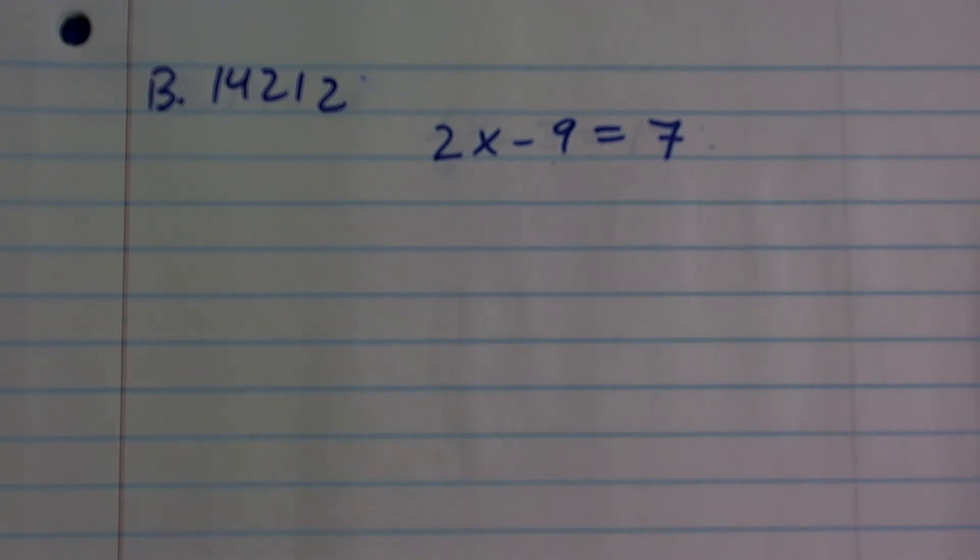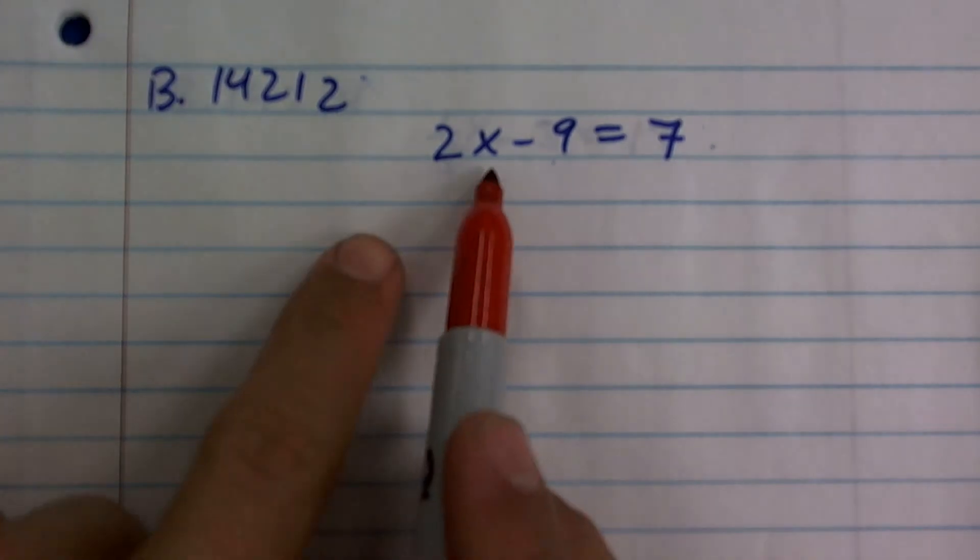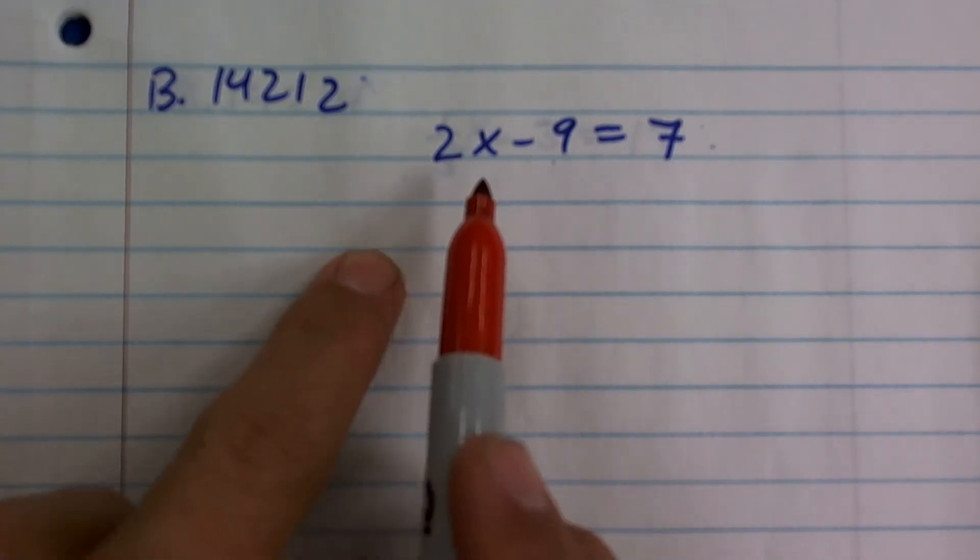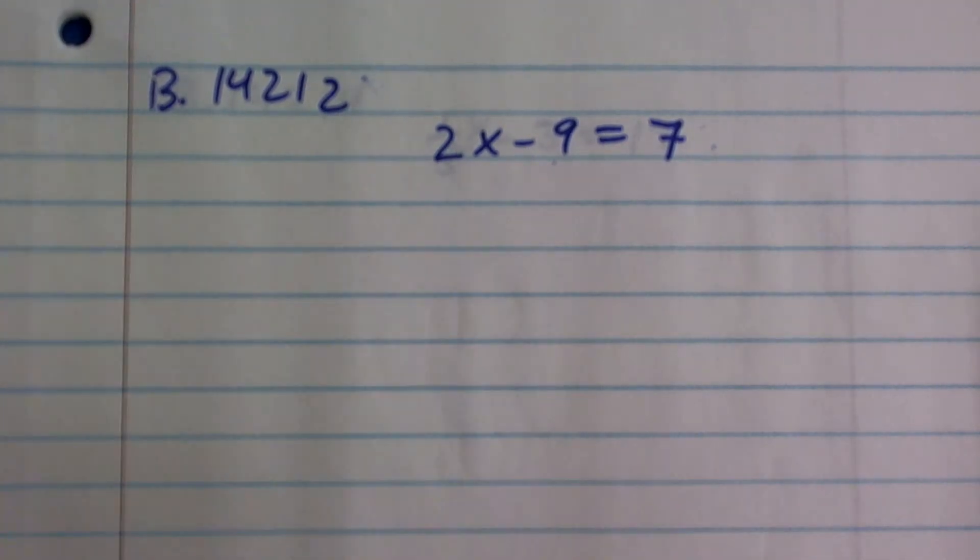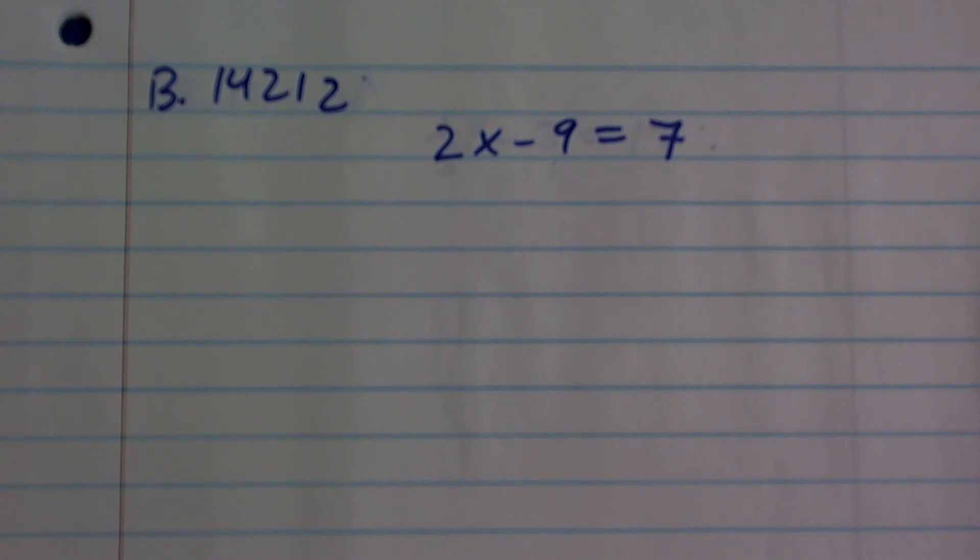To solve a problem like this, we're going to use inverse operations. We've got to get this x variable by itself. So I'm going to use my inverse order of operations, meaning I'm going to undo addition and subtraction first.